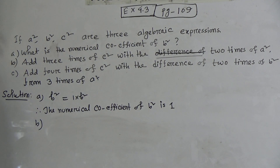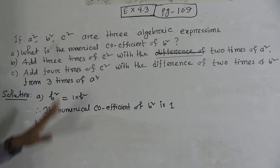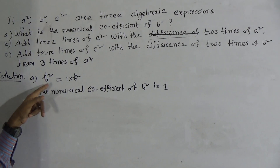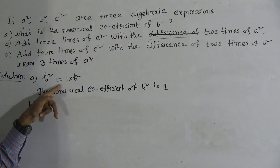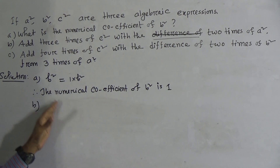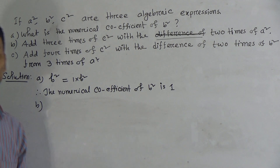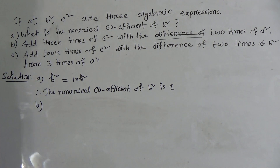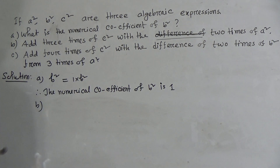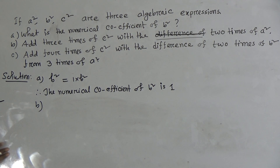Look, question number A: the numerical coefficient of B square — we have to determine it. Now, B square equals 1 into B square. Therefore, the numerical coefficient of B square is 1, and our answer will be 1. Similarly, for 3X square, the numerical coefficient of X square is 3.